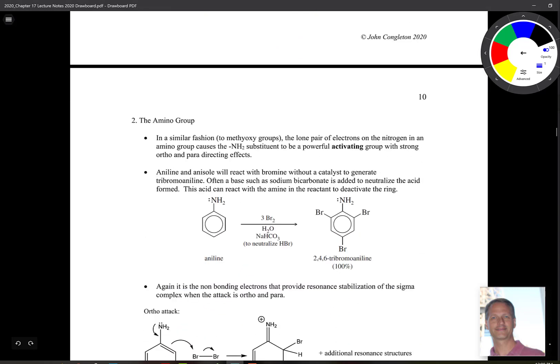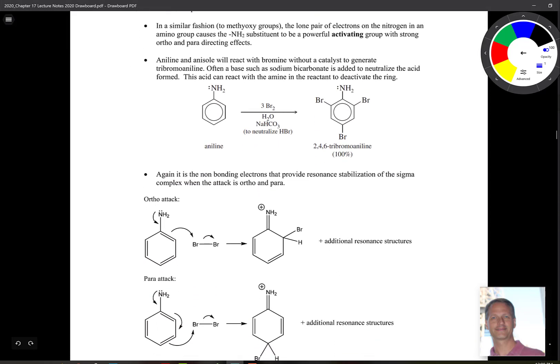But the amino group is another group that has a lone pair bearing atom in a similar fashion. That lone pair of electrons in the group itself causes that NH2 substituent to be a powerful activating group with strong ortho and para directing effects. So this, similar to the methoxy group, doesn't usually need to have iron tribromide. In fact, if you put FeBr3 in there, and we'll talk about this a little bit later, but it can complex with the lone pair and the nitrogen, and that can cause the NH2 to become a deactivating group. And so with Br2 in here, water and sodium hydrogen carbonate, that's there to neutralize the HBr. Again, because that HBr, and this is important, can also react with the NH2 to form NH3, and that would cause that to be deactivated.